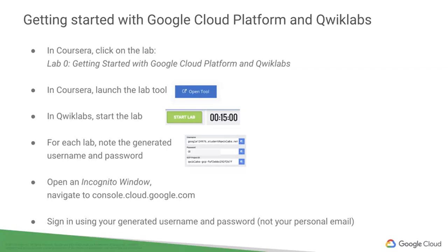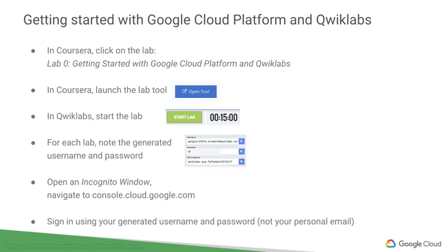Once you do click that start lab button, credentials are automatically going to be generated for you on the left-hand side. So make note of your username and password. Now once you've got that username and password, the next step is to open up an incognito window and type in console.cloud.google.com, which is going to be the login page for Google Cloud Platform.